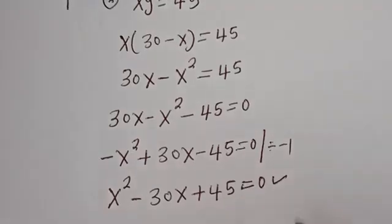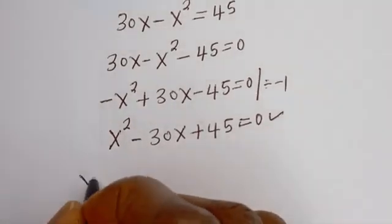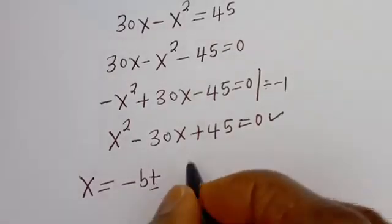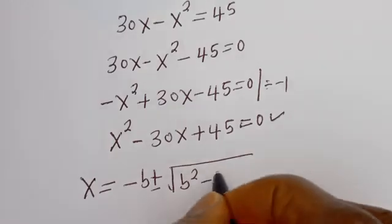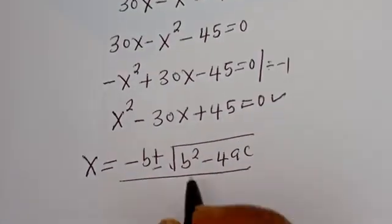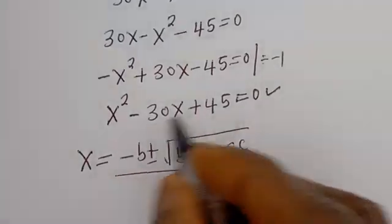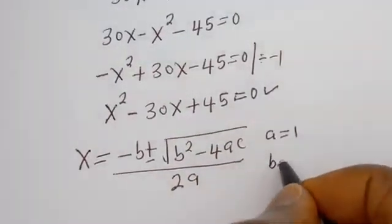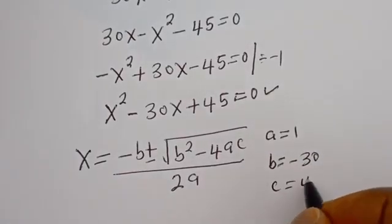This is a quadratic equation, which can be solved using the quadratic general formula. From this equation, a is equal to 1, b is equal to minus 30, and c is equal to 45.